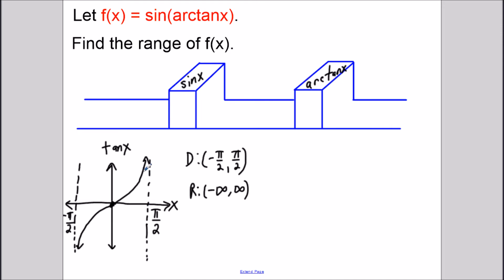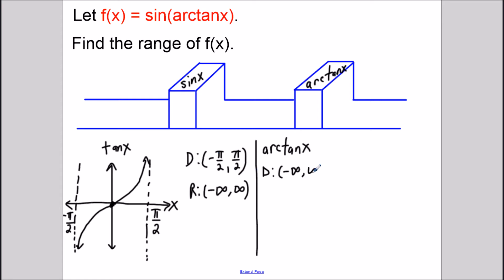This part of the graph never reaches an x value of pi over 2 — we can only get closer and closer. To find the domain and range of arctangent x, remember the easy way to find the domain and range of an inverse function is simply to flip the domain and range of the original function. So the domain of arctangent is going to go from negative infinity to infinity, and the range is going to go from negative pi over 2 to pi over 2.